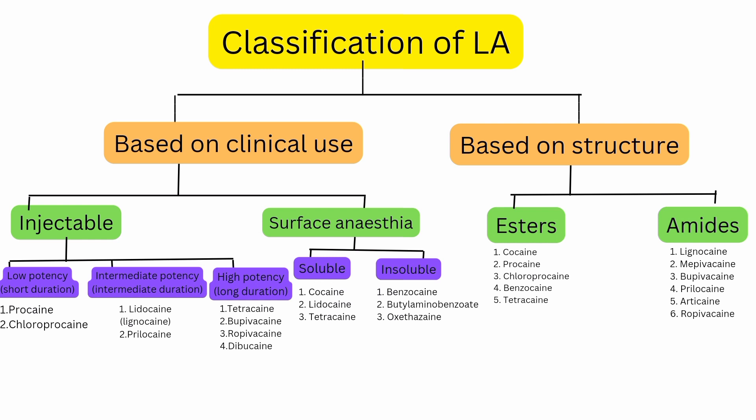Surface anesthesias are available as solutions, ointments, gels, jellies, patches, sprays, and creams. Adrenaline is contraindicated with surface anesthesia because its penetration is lower. However, topical anesthesia is useful before injecting local anesthesia and for subgingival and periodontal scaling. Surface anesthesia is classified based on chemical composition as soluble or insoluble — based on the structure of local anesthesia, which has an aromatic group (lipophilic) and an amino group (hydrophilic).